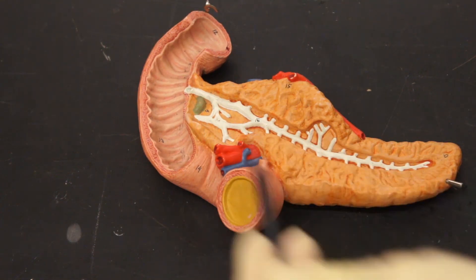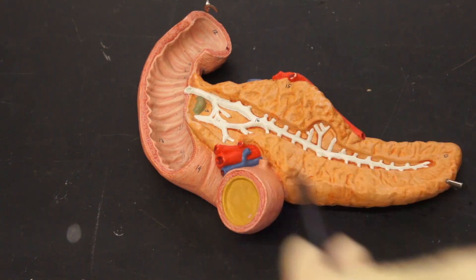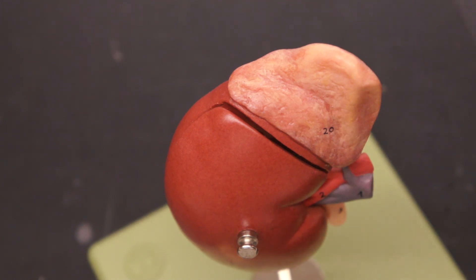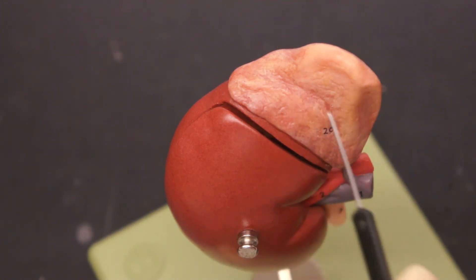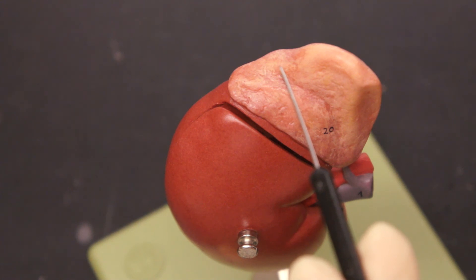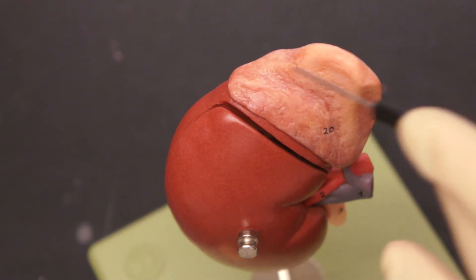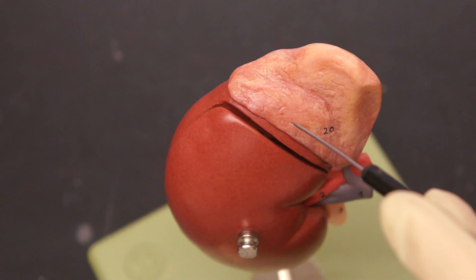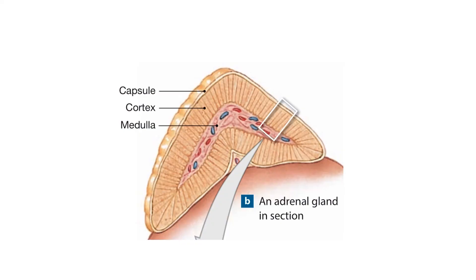The pancreas produces insulin and glucagon. The adrenal glands have an outer layer called the adrenal cortex, which produces aldosterone and cortisol, and a medulla on the inside, which produces epinephrine and norepinephrine. Here is another view of the adrenal glands with the cortex producing aldosterone and cortisol, and the medulla producing epinephrine and norepinephrine.